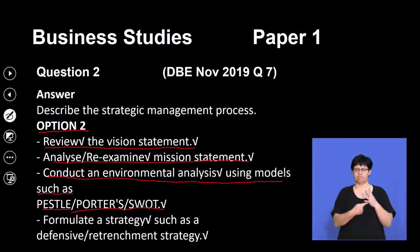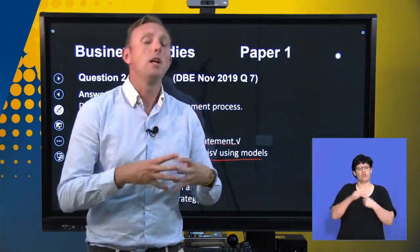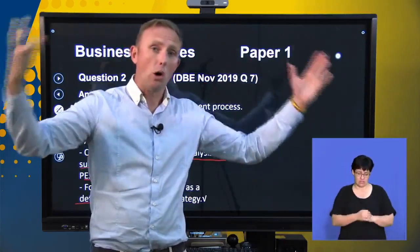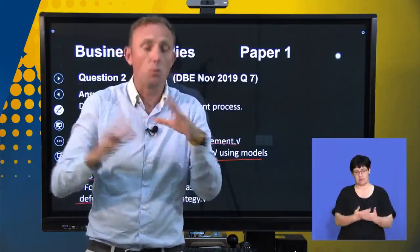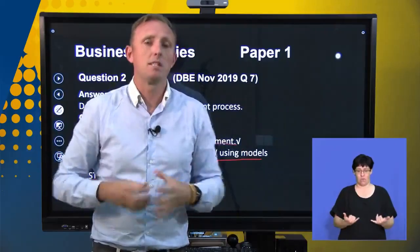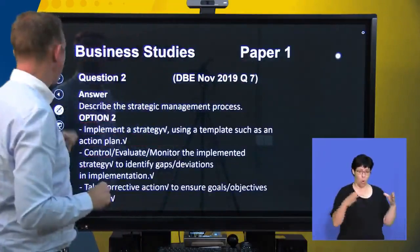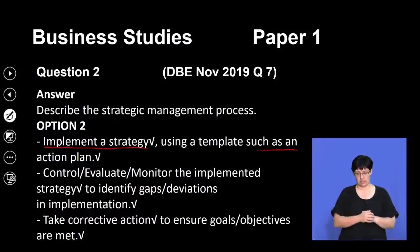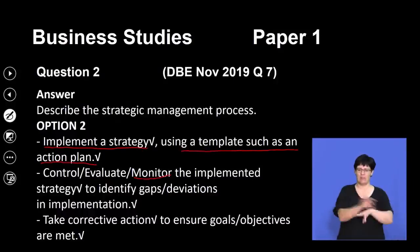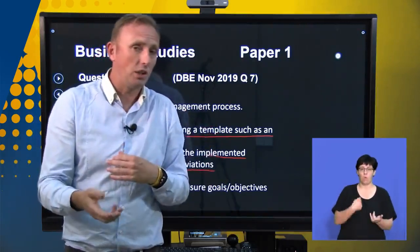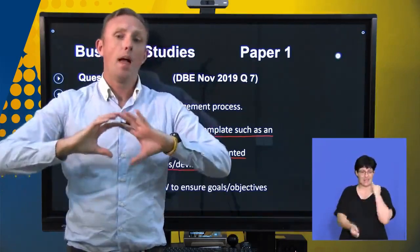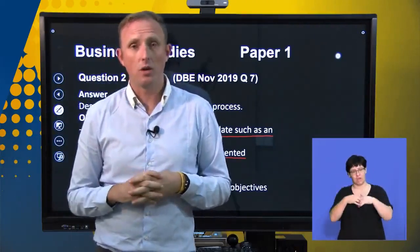You have to determine where we are sitting in the business environment — are we looking to expand or to contract? We must implement the strategy using a template such as an action plan. We've got to control, evaluate and monitor the implemented strategy to identify any gaps or deviations in implementation — what are the possible pitfalls, and how do we ensure we've thought of all possible scenarios that could impact on our business strategy?